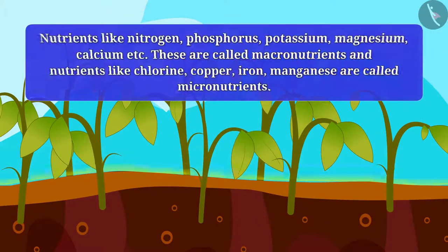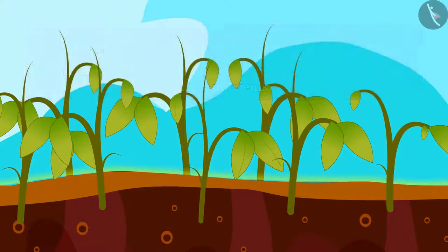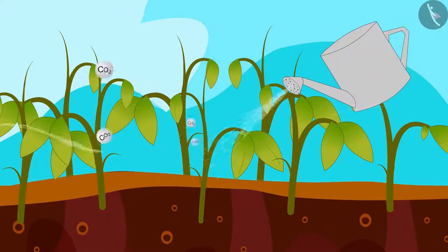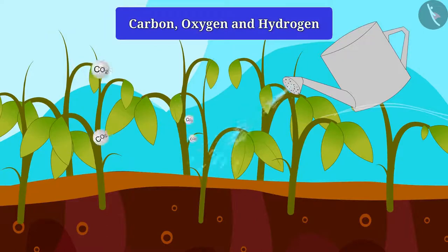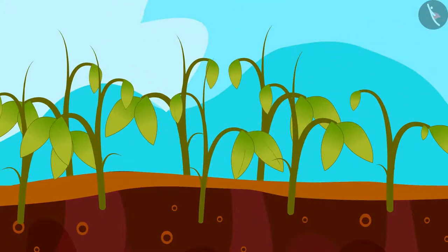Most of the trees get nutrients from the soil like nitrogen, phosphorus, potassium, magnesium, and calcium. Do you know what nutrients the tree gets from air and water? Trees get carbon, oxygen, and hydrogen from air and water. All these nutrients help plants to grow.